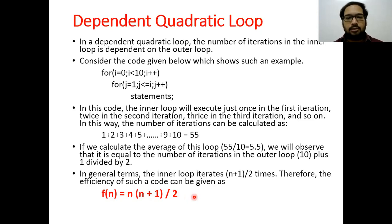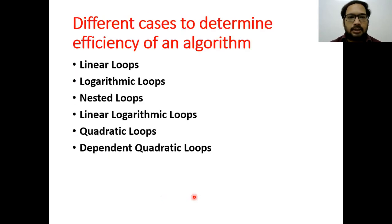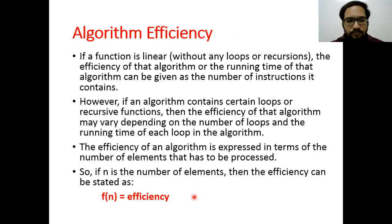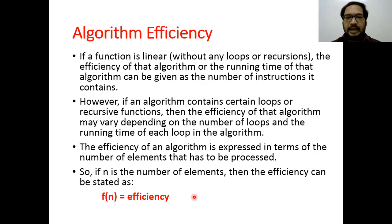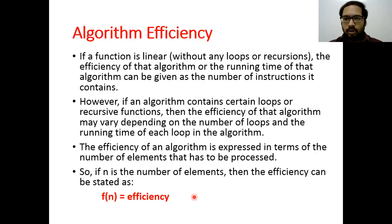This is how you calculate algorithm efficiency when implementing any algorithm in data structures. Where n is the number of elements, and depending on how many loops you are using — or whether you are implementing without loops — you can identify the efficiency of that algorithm.